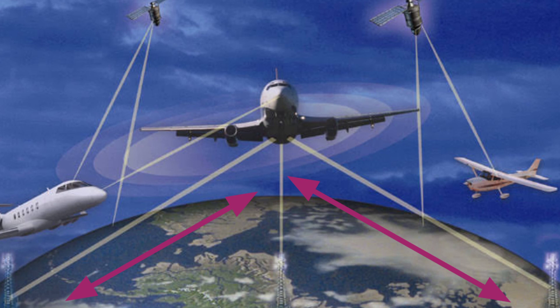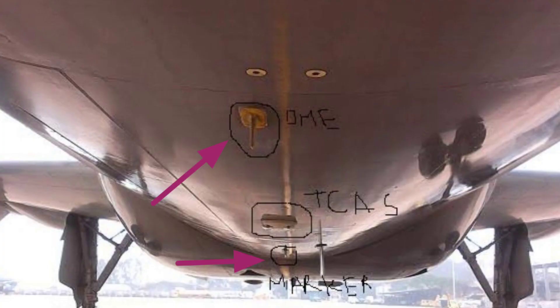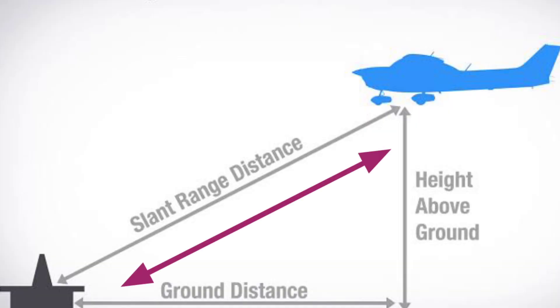It will also tell the distance of the aircraft from the ground VOR transmitter. The second type is ILS DME. In an instrument landing system, we have to know the location of the aircraft and how much distance is needed to reach the outer marker, middle marker, or inner marker. With the help of DME and markers, we can identify the distance of the aircraft from the ground station.